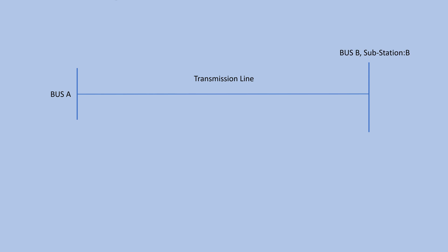Suppose this is a transmission line where power is sent from bus A of one substation to bus B of another substation. The transmission line is protected by a distance protection scheme from both ends. The discussion is limited only from one end, that is from bus A end. The locations of CT, PT, relay, and circuit breaker are shown here.